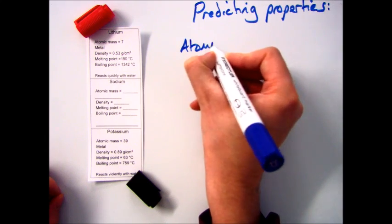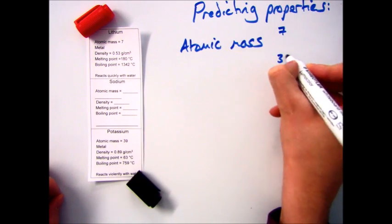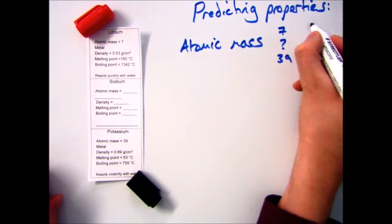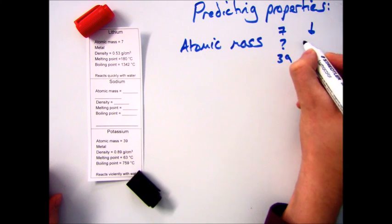So if we look at a couple of examples, if we have a look at the atomic mass of lithium and potassium, which is 7 and 39, and he didn't know sodium, he'd go somewhere in the middle, so for example 15.